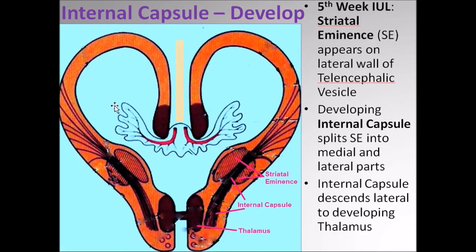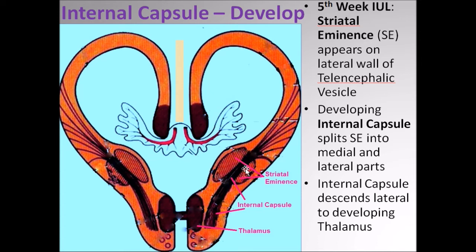Let's come straight to the internal capsule itself, which is the most important component of the projection fibers. During the fifth week of intrauterine life, a swelling appears on the lateral wall of the telencephalic vesicle, referred to as the striatal eminence. When the internal capsule fibers are developing and descending down, they split the striatal eminence into two components — a medial part and a lateral part. This medial part comes to be known as the caudate nucleus, and the lateral part comes to be known as the lentiform nucleus, or more specifically, the putamen. The two together are referred to as the striatum. The descending internal capsule fibers descend down to the subcortical structures, lateral to the thalamus.